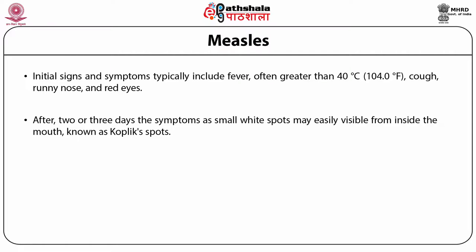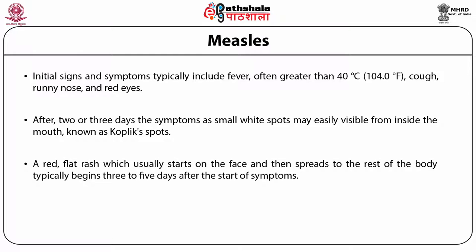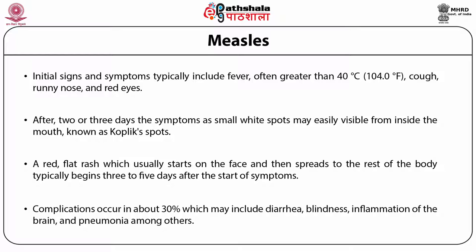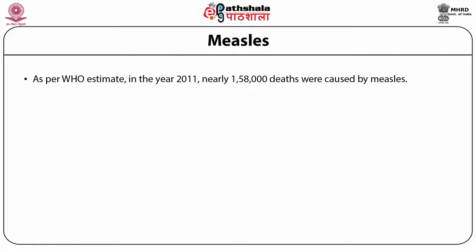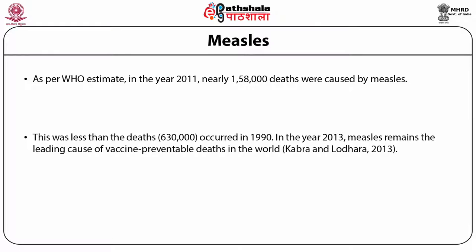After 2 or 3 days, small white spots may be visible from inside the mouth, known as Koplik's spots. A red, flat rash which usually starts on the face and then spreads to the rest of the body typically begins 3 to 5 days after the start of symptoms. Complications occur in about 30% of cases, which may include diarrhea, blindness, inflammation of the brain, and pneumonia among others. As per the WHO estimate, in 2011, nearly 158,000 deaths were caused by measles, which was less than the 630,000 deaths that occurred in 1990.